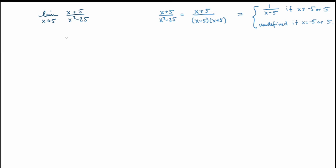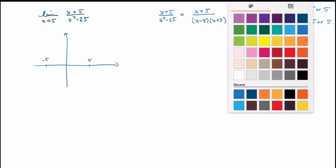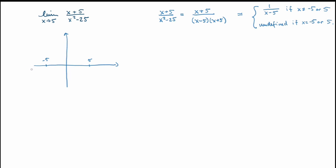With this in mind, I can now sketch a graph of the function. There are going to be two special things happening at −5 and 5 because the function is not defined at these points. If I just sketch the graph, I'll get a hole at −5, but at 5 I'll get a different behavior, so I'll draw a vertical line there.